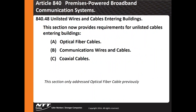Article 840 covers premises-powered broadband communication systems. The code making panel identified a need to address unlisted wires and cables coming into buildings — optical fiber cables, communications cables, and coaxial cables. The article defines these cable types and provides a proposal on how to recognize them and address them safely so they are installed correctly.